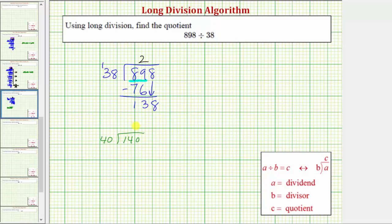So looking at this quotient, 3 times 140 would be 120. Notice how we have a remainder of 20. But because there are three 40's in 140, it's reasonable to assume there would be 3 38's in 138.